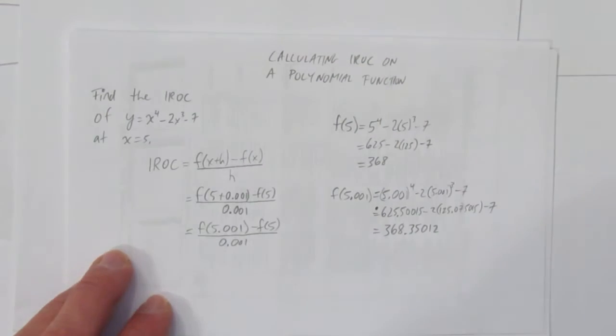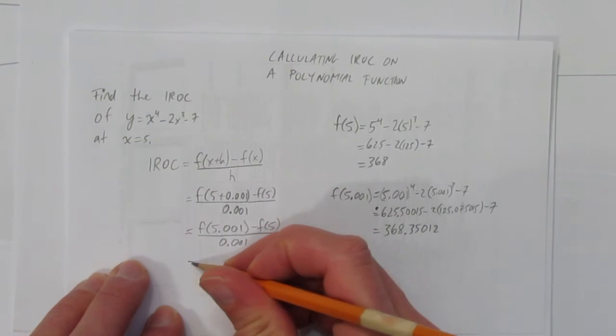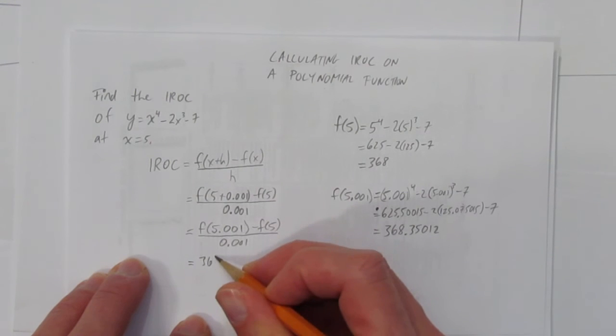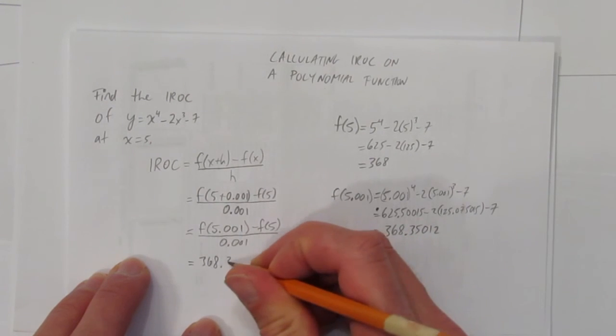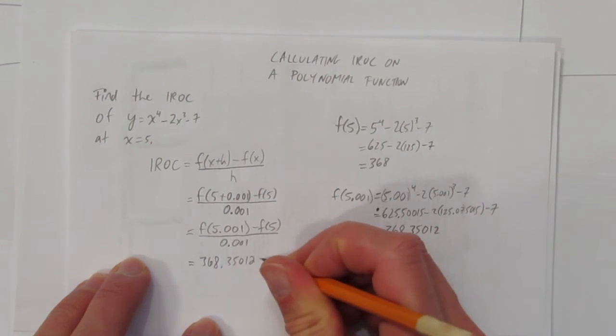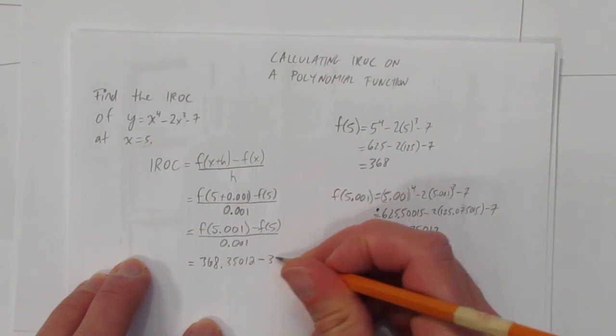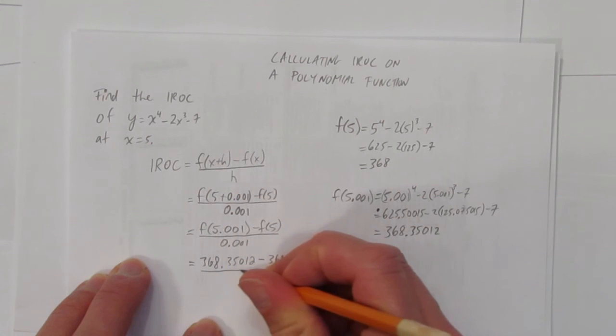And we get 368.35012. Okay. So now, when we go to calculate the IROC value, we take the value of f at 5.001, which was 368.35012. And we subtract the value of f at 5, 368, all over 0.001.